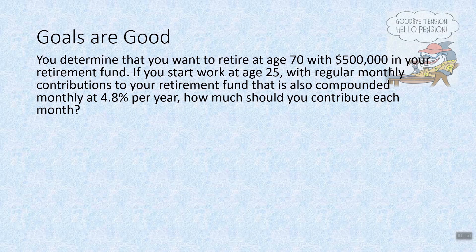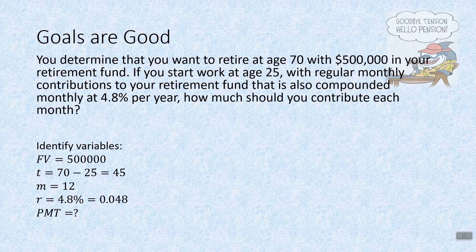You determine that you want to retire at age 70 with $500,000 in your retirement fund. If you start work at age 25 with regular monthly contributions, also compounded monthly at 4.8% per year, how much should you contribute each month? Our future value is $500,000. Retiring at 70 and starting at 25 is a span of 45 years. We're compounding monthly, and our interest rate of 4.8% is 0.048. We want to find the payment.